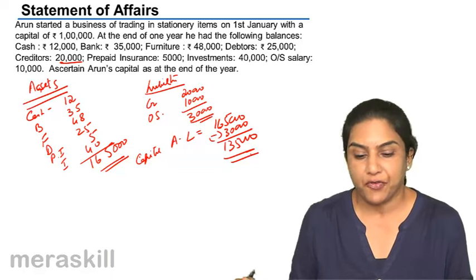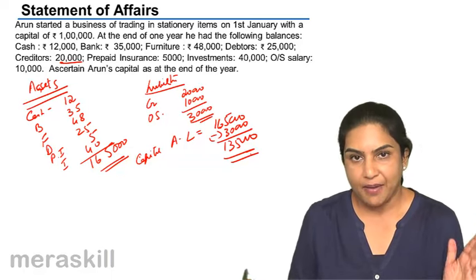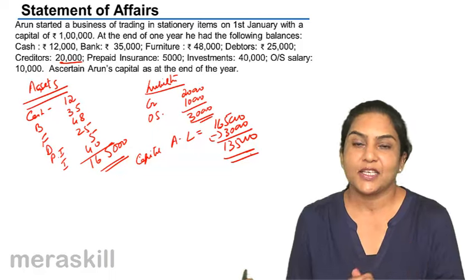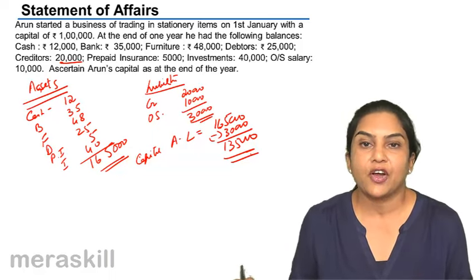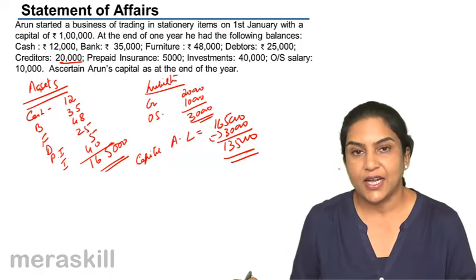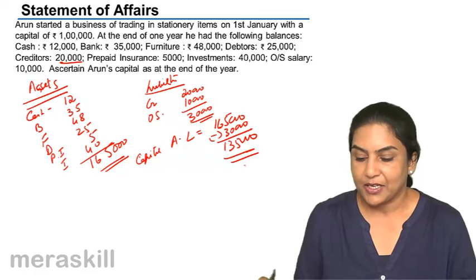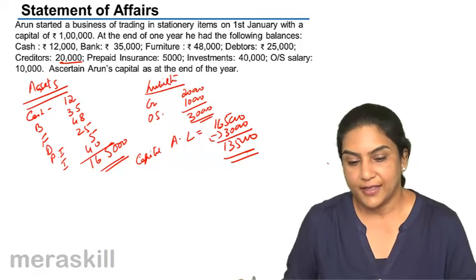Normally, a statement of affairs would be prepared with liabilities on one side in rupees and assets on the other side in rupees. The balancing figure on the liability side would represent capital, which in this case is 1,35,000.